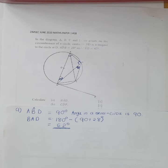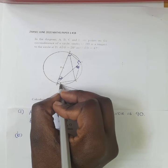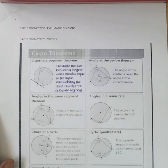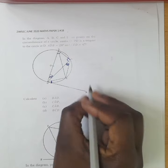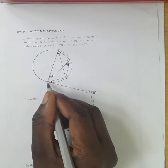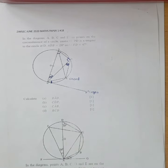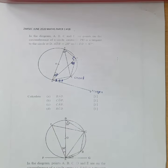Now we move to Part B, where we calculate angle CDP. CDP is the angle between the tangent and the chord. We apply the alternate segment theorem: the angle that lies between a tangent and a chord is equal to the angle subtended by the same chord in the alternate segment. So this line is the tangent, this is the chord, and angle CDP equals the angle in the alternate segment.